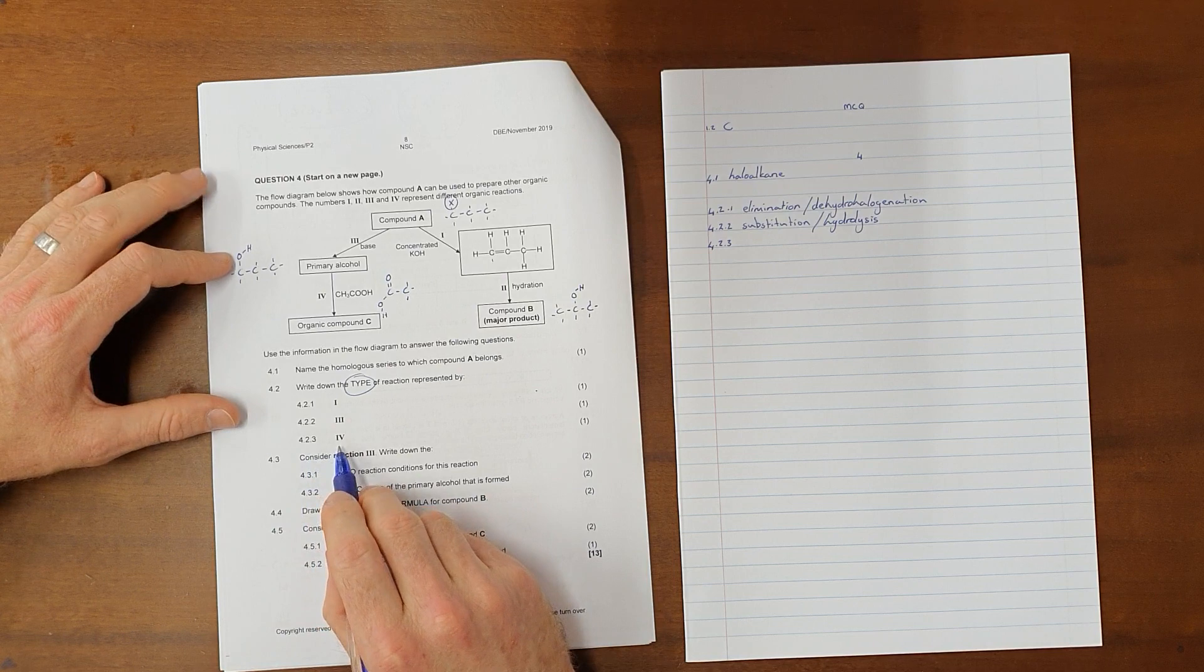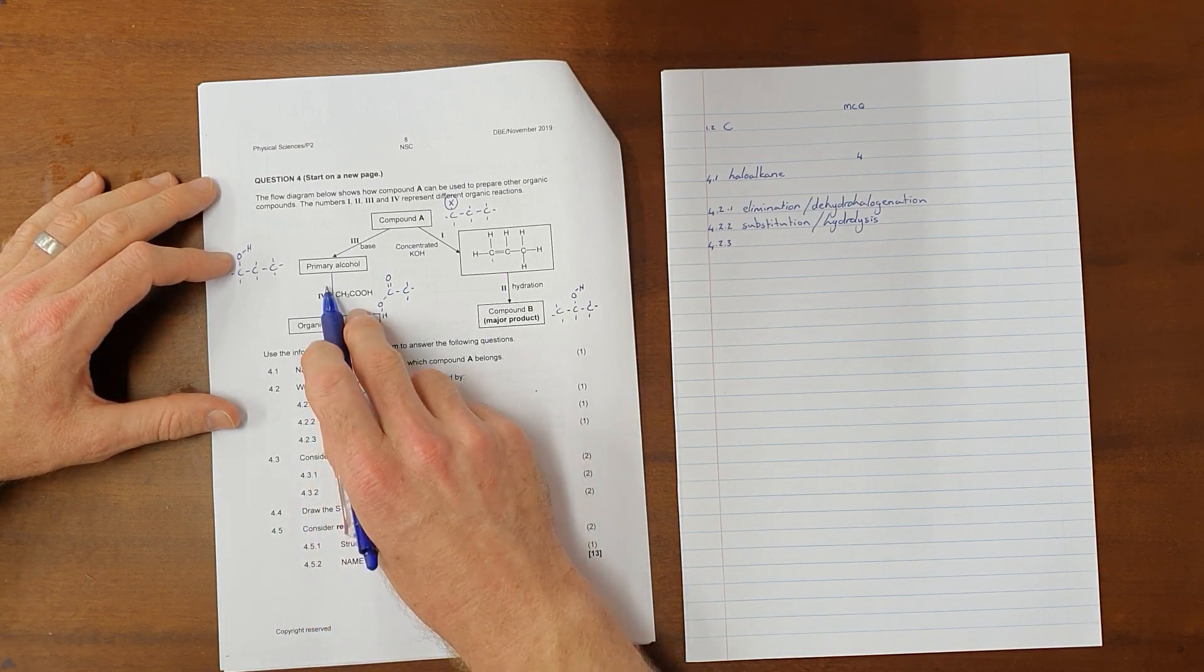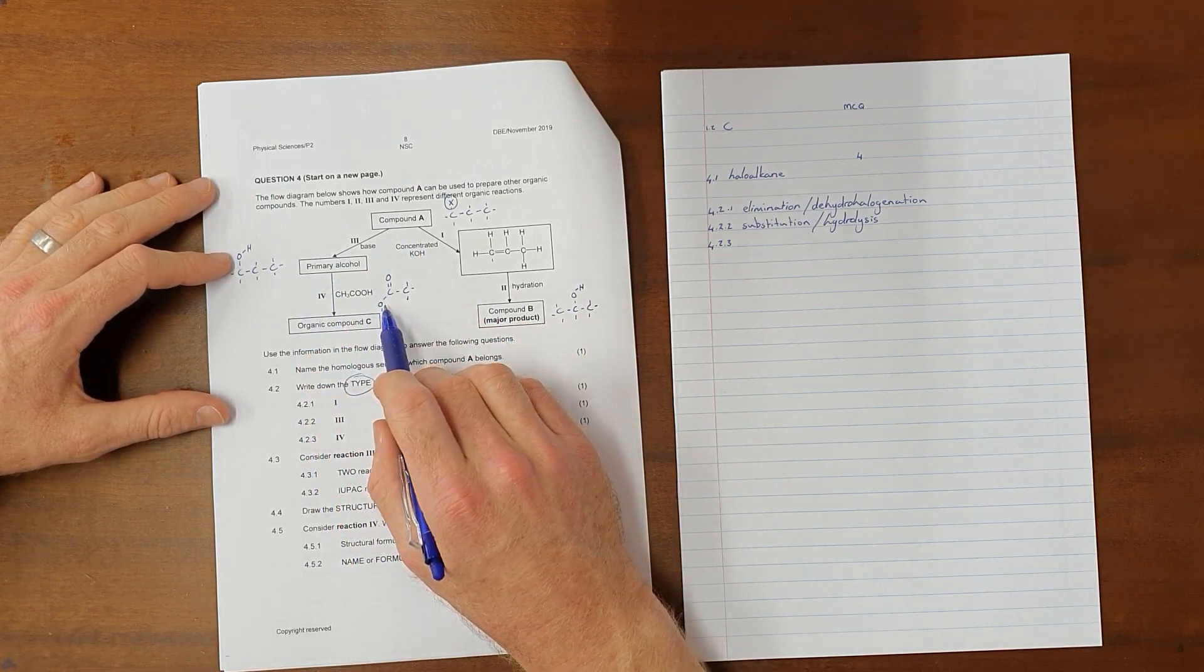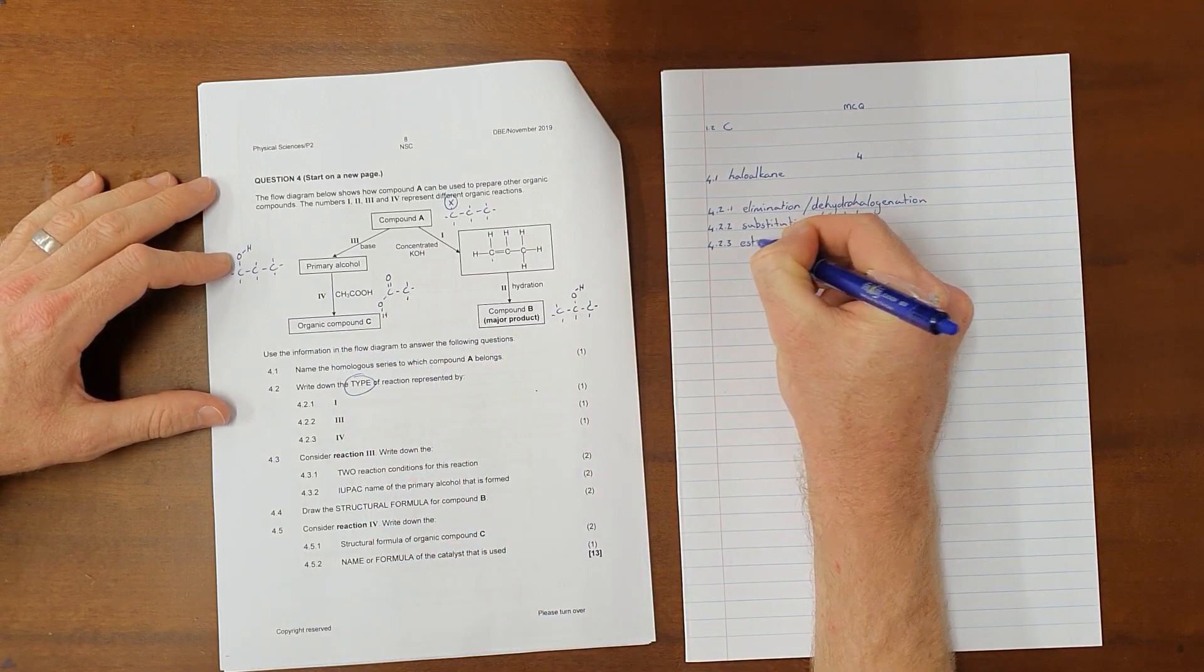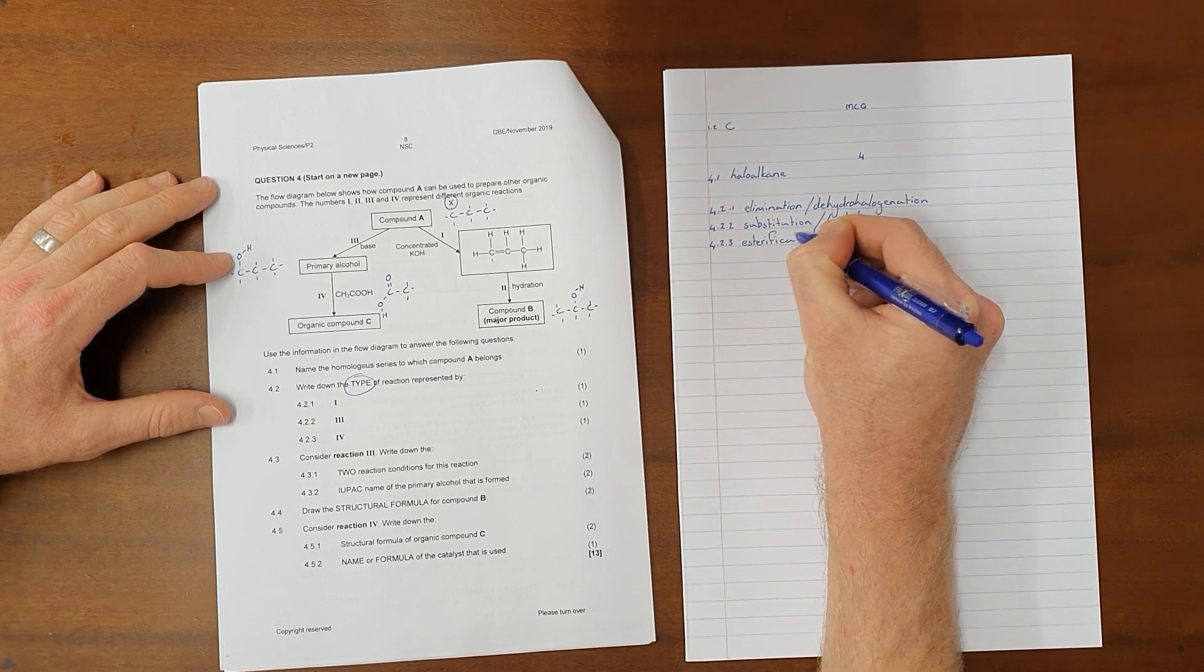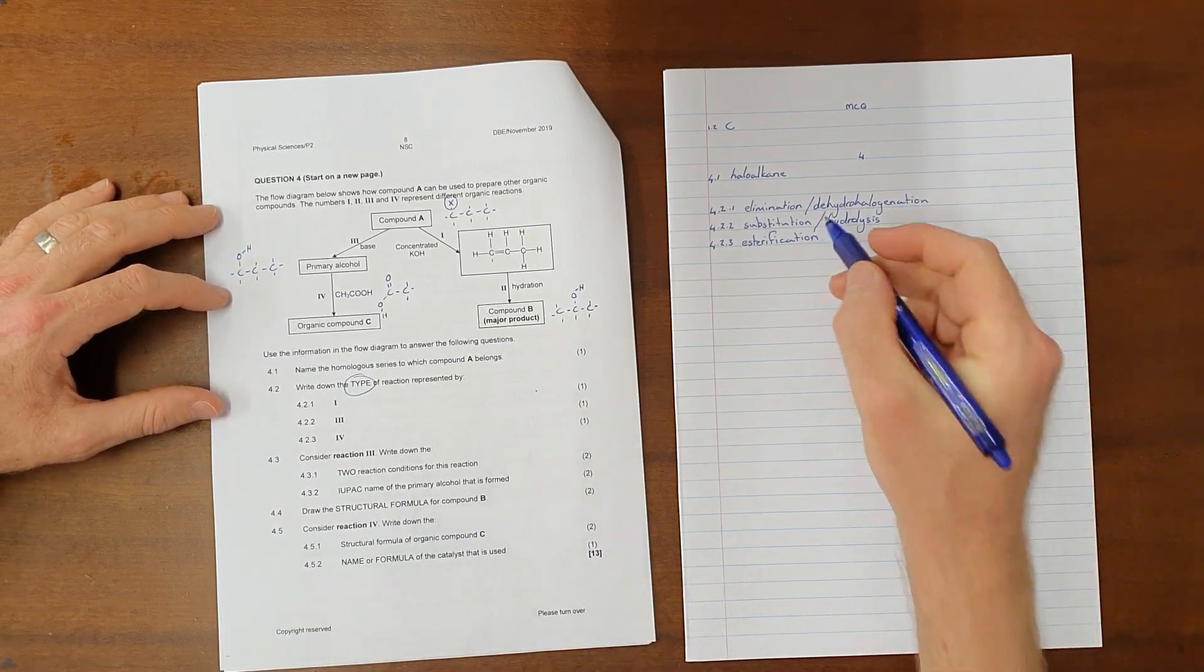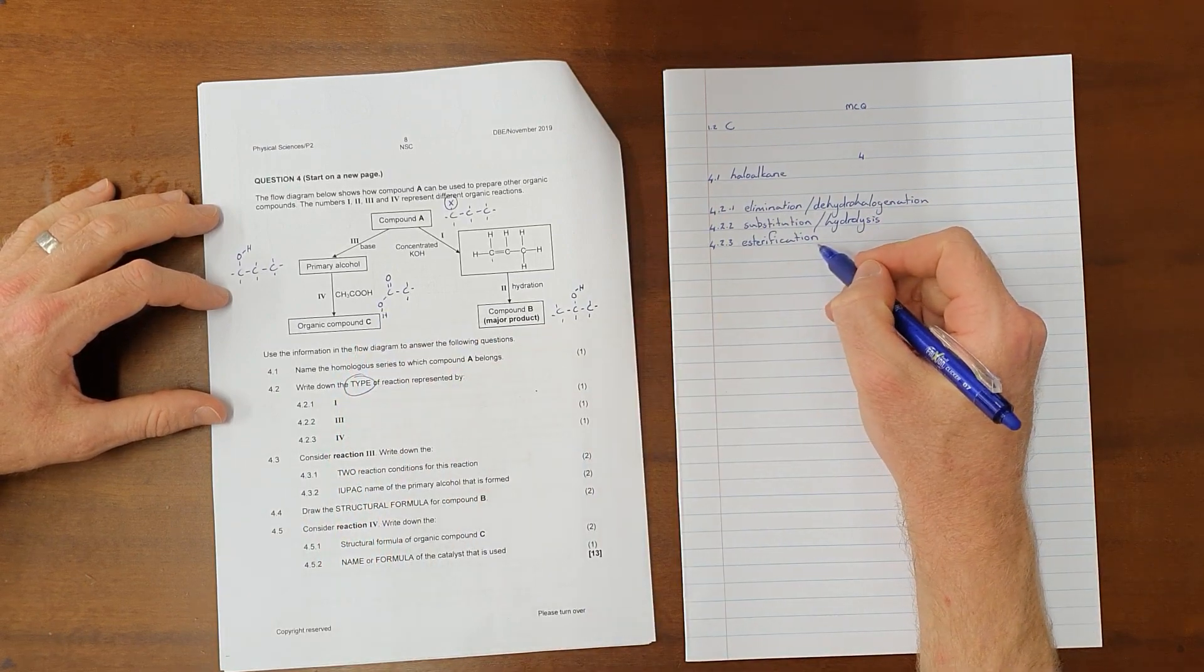4.2.3 asks what type of reaction is represented by 4. And as we've said, the reaction between a primary alcohol and a carboxylic acid is always going to be an esterification reaction. In this case, esterification is the most correct answer. Although it is also acceptable to say that the type of reaction here is an elimination reaction. But for this specific reaction, we require esterification.